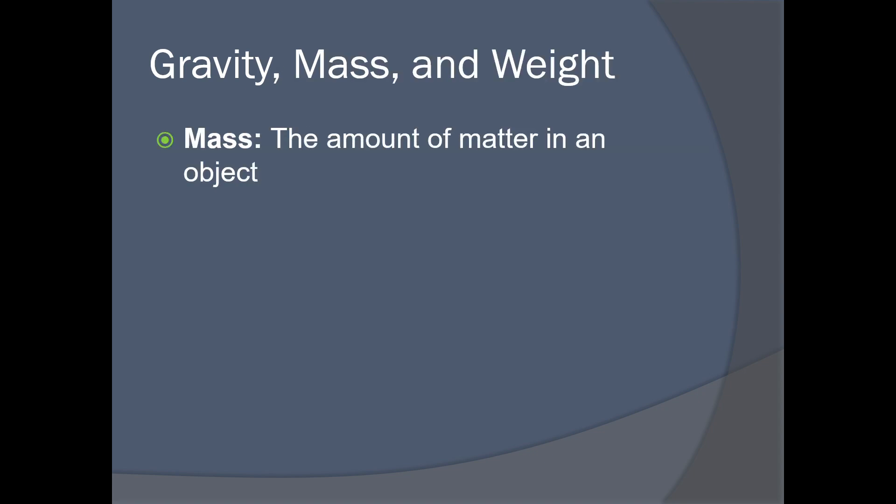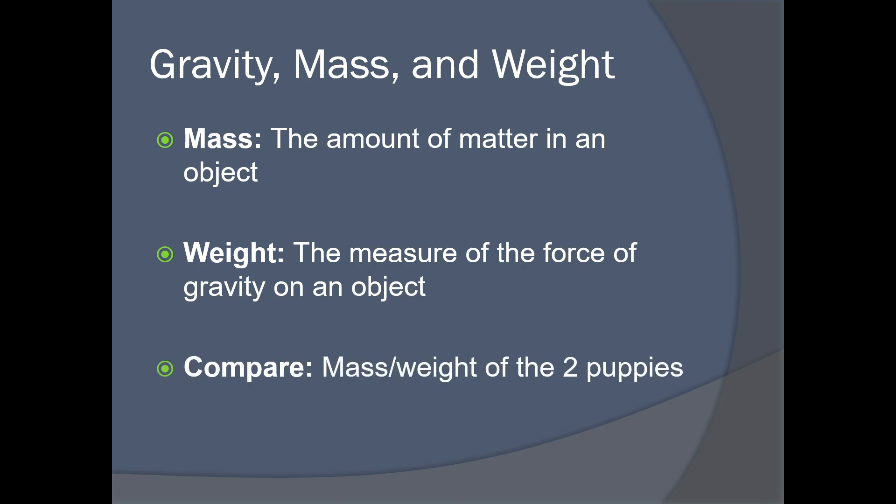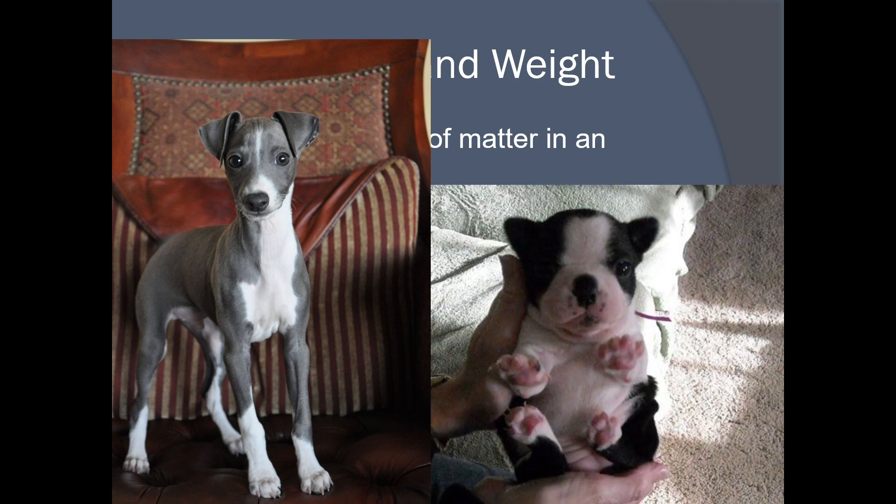Here's gravity, mass, and weight. Here's the difference. Mass is the amount of matter in an object, and weight is the measure of the force of gravity on an object. Compare the mass and weight of these puppies. On the left-hand side, that obviously has a larger mass than the one on the right, therefore it's probably going to have a larger weight. On Earth, we're all subjected to the same amount of gravity, one g, so mass and weight are kind of correlated—the larger thing is going to be heavier, but that's not always the case.